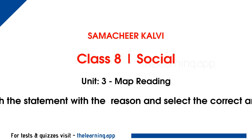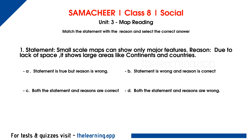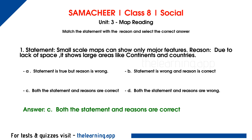Match the statement with the reason and select the correct answer. Question 1: Statement: Small scale maps can show only major features. Reason: Due to lack of space, it shows large areas like continents and countries. Options are a. Statement is true but reason is wrong, b. Statement is wrong and reason is correct, c. Both the statement and reasons are correct, d. Both the statement and reasons are wrong. Correct answer is c. Both the statement and reasons are correct.